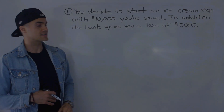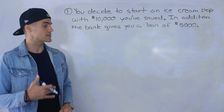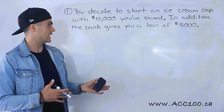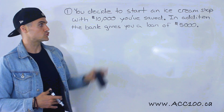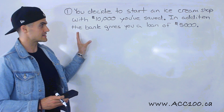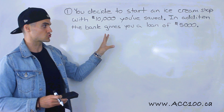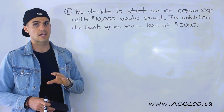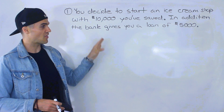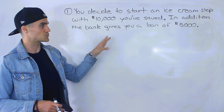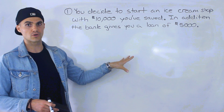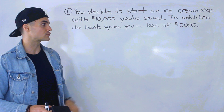Starting with the first transaction, let's say that you decide to start an ice cream shop with $10,000 that you've saved. In addition, the bank gives you a loan of $5,000 as well. Now, as simple as this initial transaction for your business sounds, there's actually a lot going on here. I'm going to spend a little bit of time on this simple transaction because we can relate a lot of things from here to accounting, and I'm going to introduce a lot of different concepts.